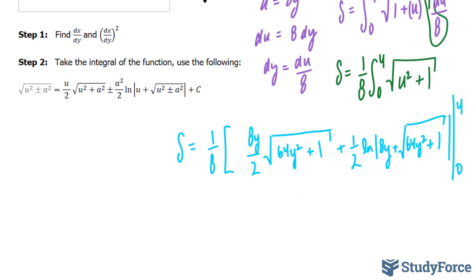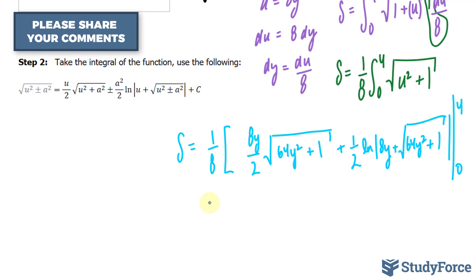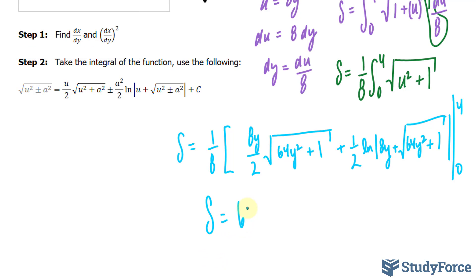If you evaluate this correctly, in other words, if you substitute 4 into wherever you see a y, find the answer, and then substitute 0 wherever you see the y, find its answer, and subtract the 2, then multiply by 1 over 8, you should get an arc length that's approximately 64.3 units.